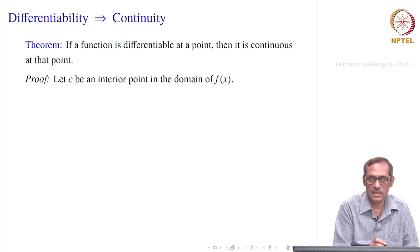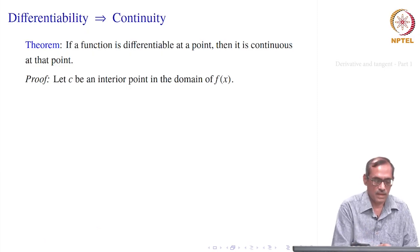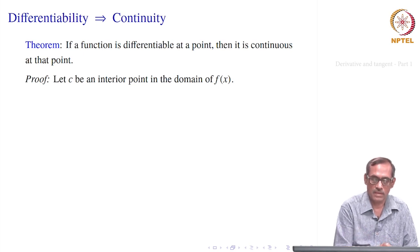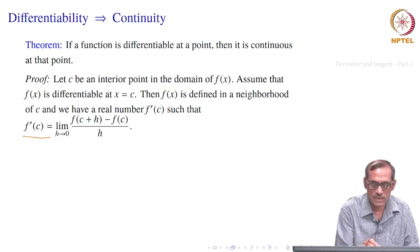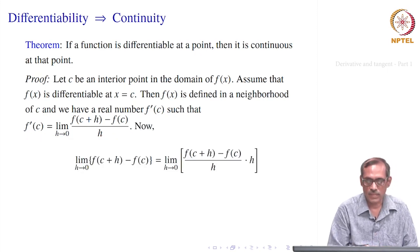We can prove this easily. Suppose f is differentiable at an interior point c of its domain. Then the limit of [f(c + h) − f(c)] / h as h → 0 exists and equals f'(c). We express: f(c + h) − f(c) = [f(c + h) − f(c)]/h · h. Taking the limit of both sides, the limit of the product equals the product of the limits.